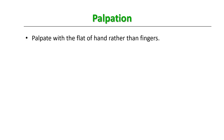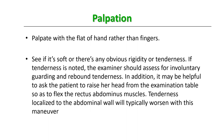After inspection comes palpation. Palpate with the flat of your hand rather than fingers. See if the abdomen is soft or if there is any obvious rigidity or tenderness. If tenderness is noted, assess for involuntary guarding and rebound tenderness. It may also be helpful to ask the patient to raise her head from the examination table to flex the rectus abdominus muscles — tenderness localized to the abdominal wall will typically worsen with this maneuver. You can find such tenderness in red degeneration of fibroid, ruptured ectopic pregnancy, or twisted ovarian cyst.